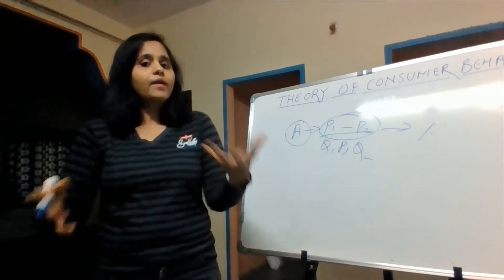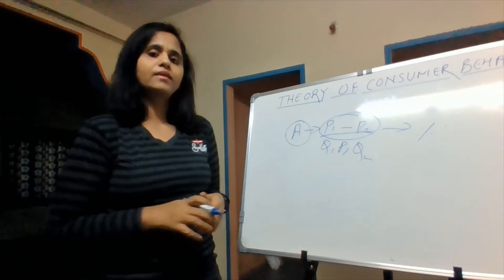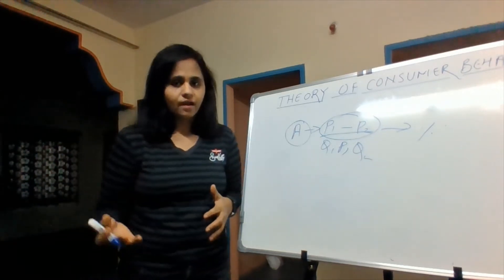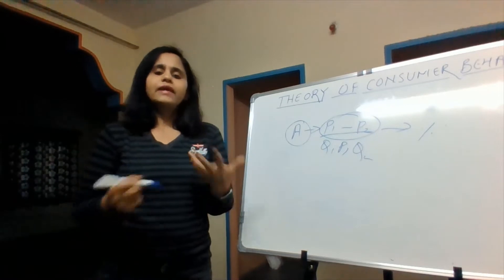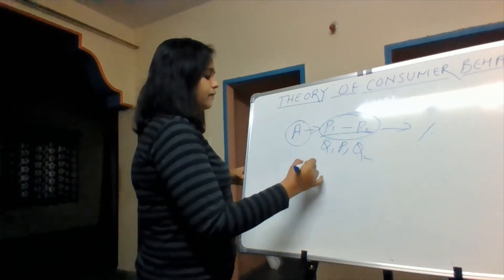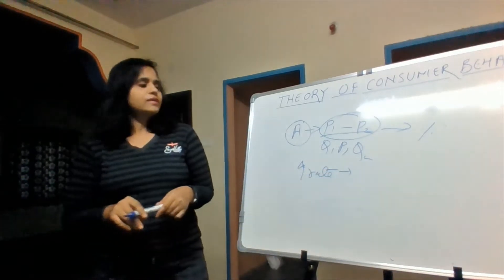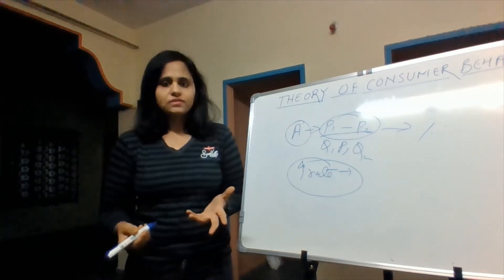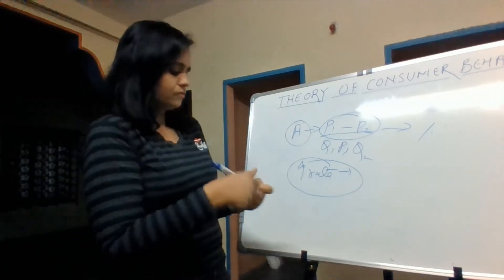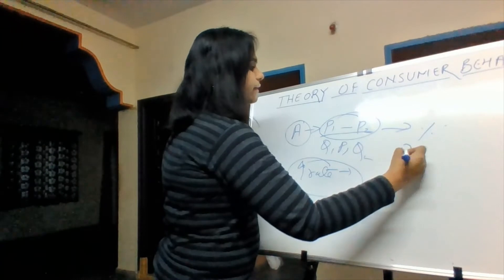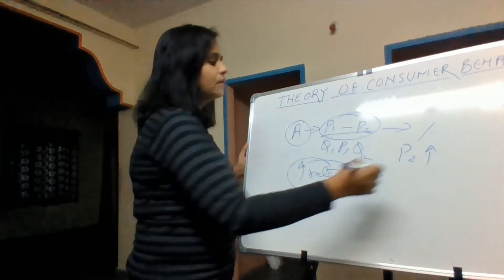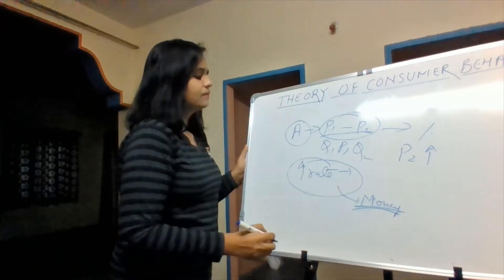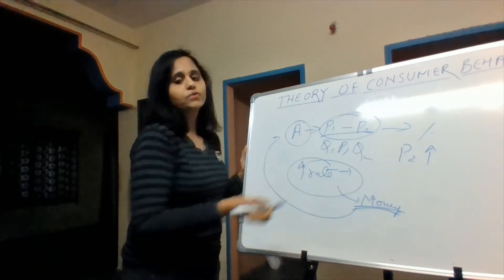Now, why am I telling you this? Just to give you a very practical example of the theory of demand. When inflation goes up, that means prices are going very high. What does RBI do in that case? RBI increases the rate at which banks lend to you. What does it mean if that rate increases? That means money is getting costly. In order to counter rising prices, RBI tries to make money more expensive. If money becomes more expensive, demand will reduce.